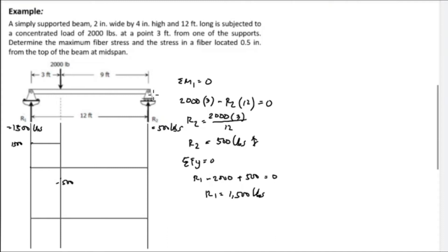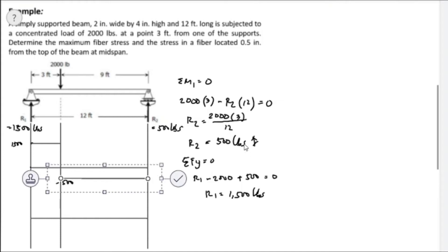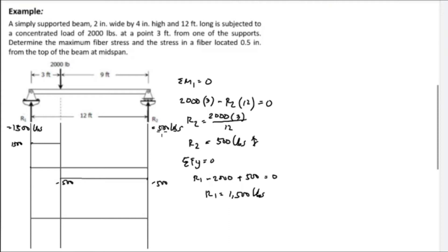At the concentrated load, 2,000 pounds acts downward, so 1,500 minus 2,000 equals negative 500. From that point to support 2 there is no load, so the shear remains a horizontal line at negative 500. At reaction R2 the 500-pound upward reaction brings the shear back to zero.